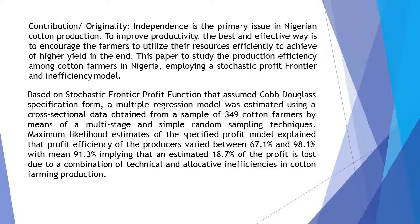This paper studies production efficiency among cotton farmers in Nigeria, employing a stochastic profit frontier and inefficiency model. Based on a stochastic frontier profit function assuming Cobb-Douglas specification form, a multiple regression model was estimated using cross-sectional data obtained from a sample of 349 cotton farmers by means of multistage simple random sampling techniques.